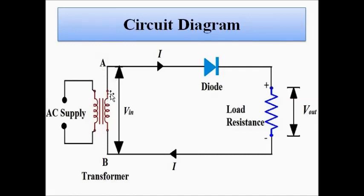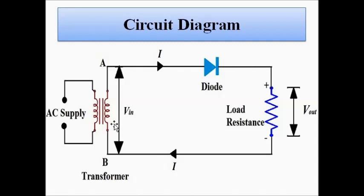One end of the secondary winding of the transformer — which we will call point A — is connected to the p-type end, the positive end, of the PN junction diode. The other end is connected via a load resistance to the other end — point B — of the secondary winding of the transformer. We take the DC output across the load resistance RL. Now let us see how half wave rectification takes place — the circuit behavior.